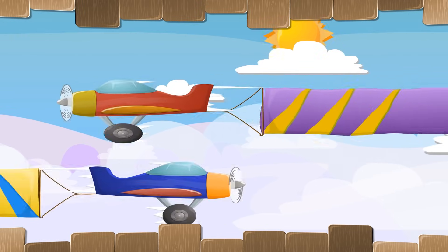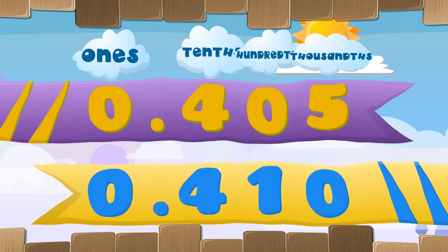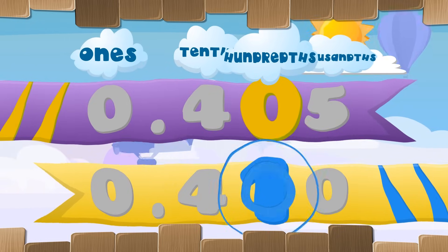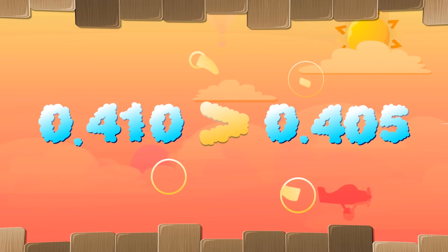Line up the decimal points vertically. Look left to right horizontally. Compare the greatest place that's different. The greater number will become apparent.